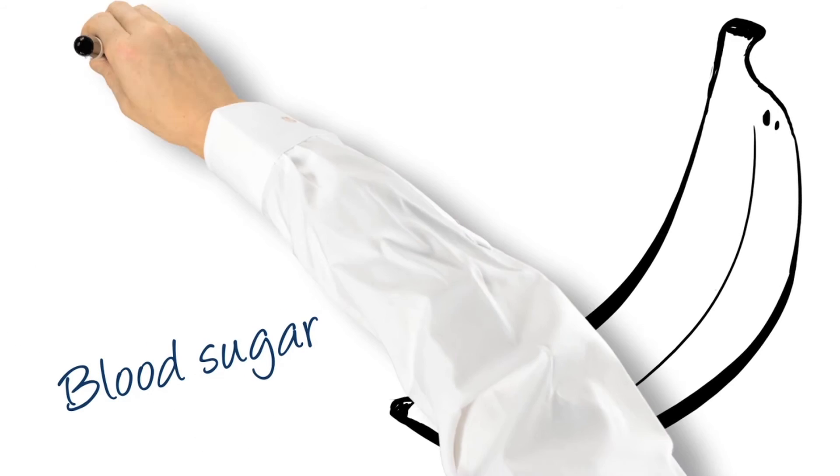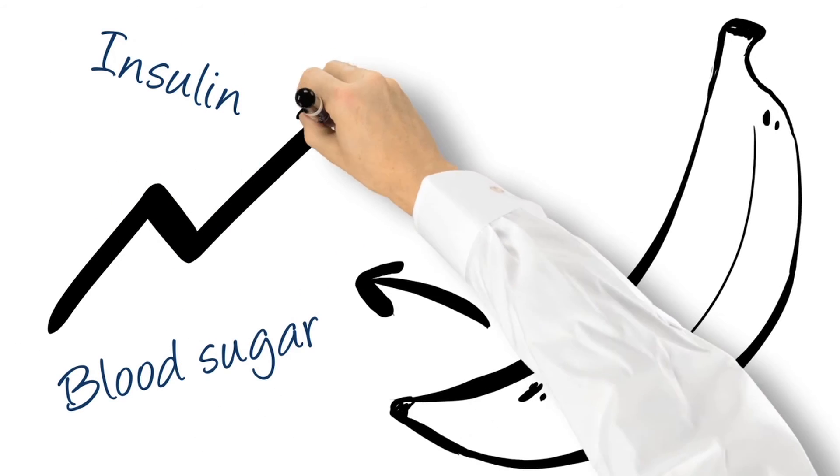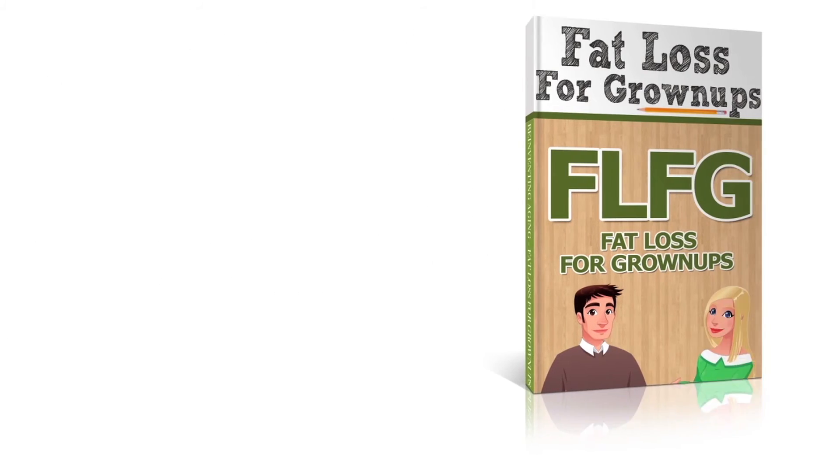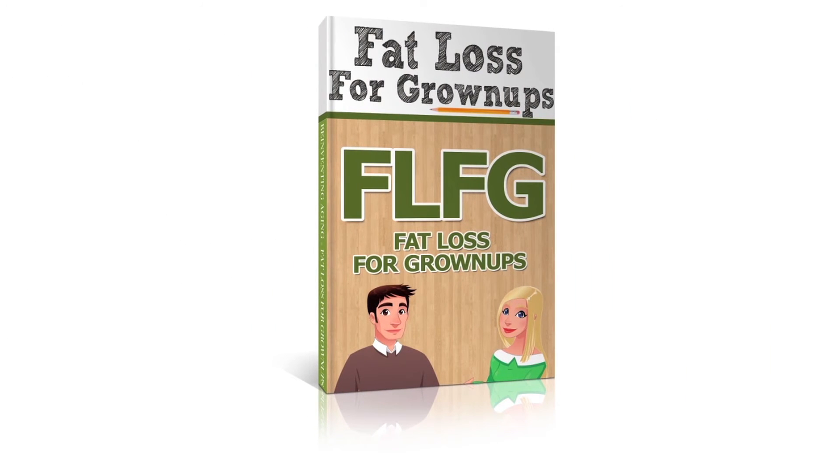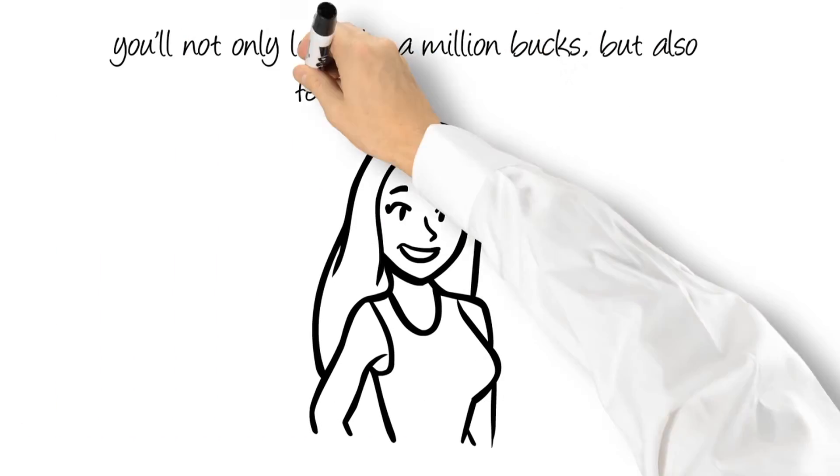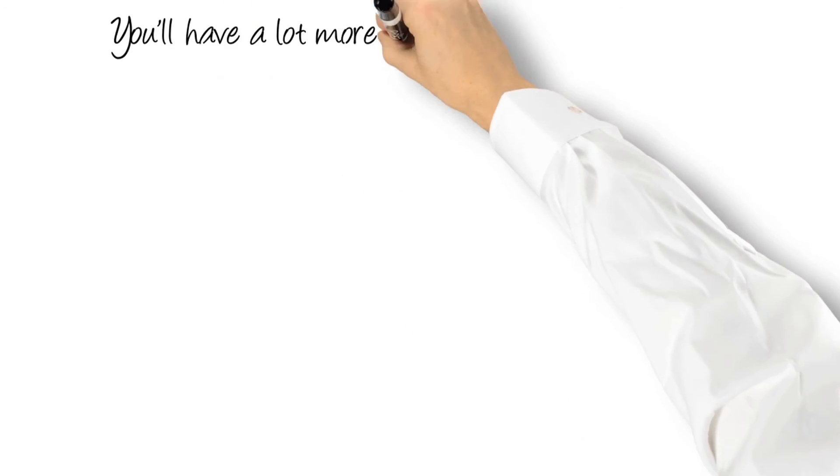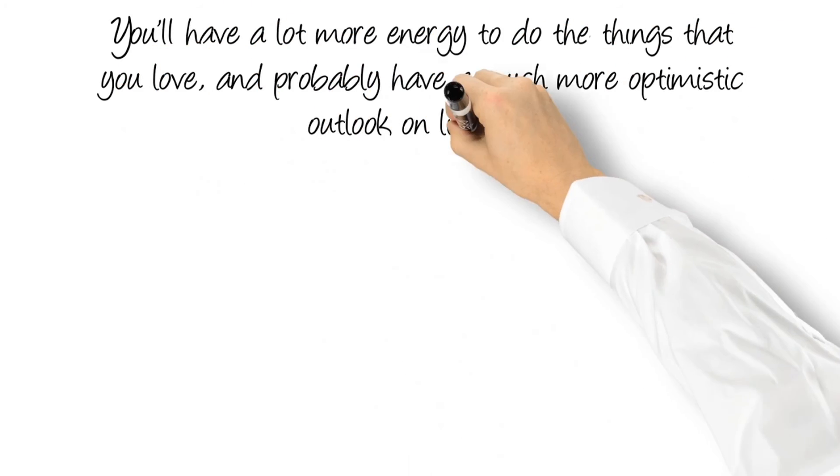That's why bananas are one of the foods that you should avoid. They trigger a rapid rise in blood sugar, causing your insulin to spike, which then activates weight gain. In fact, excess insulin is a major cause of obesity. You see, fat loss has a lot to do with knowing how to balance food, sugar, and insulin, and we show you how to do that. That's just one of the many things we discuss in our program, Fat Loss for Grown-Ups, which will ultimately have a massive positive effect on your appearance. And you'll not only look like a million bucks, but you'll also feel more healthy. You'll have a lot more energy to do the things that you love, and probably have a much more optimistic outlook on life, too.